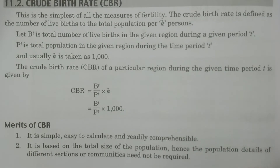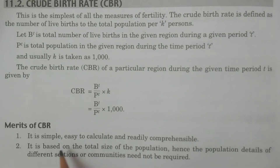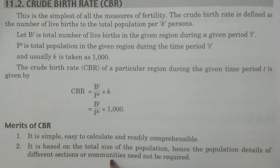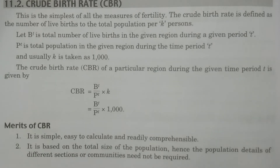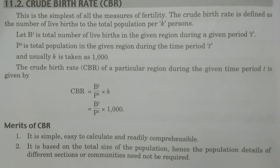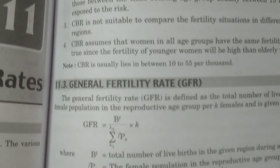Now we see the merits and demerits of CBR. The merits are: it is simple and easy to calculate and readily comprehensible. It is based on the total size of the population, so population details of different sections or communities are not required — the entire population is considered.